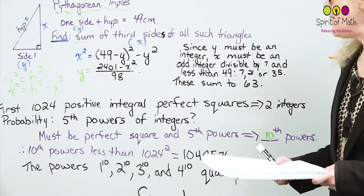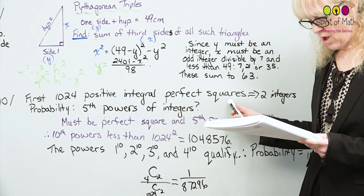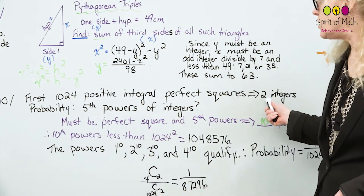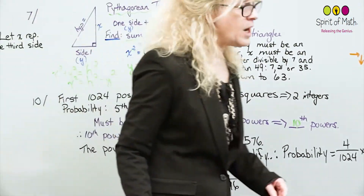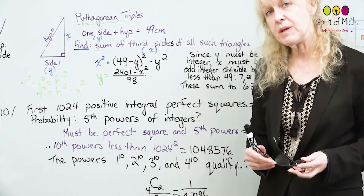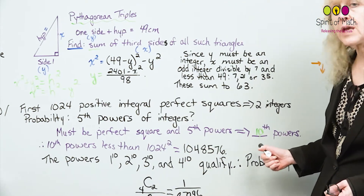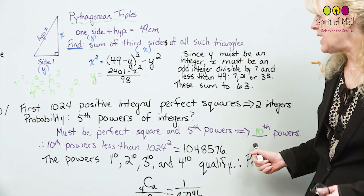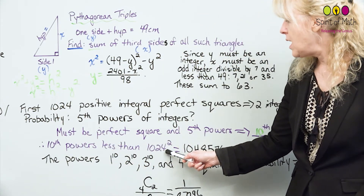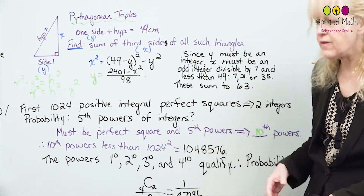Number ten: two integers are selected from the first 1024 positive perfect squares. What is the probability that both numbers are fifth powers of integers? Since we're picking from perfect squares, the numbers must be perfect squares. They also have to be fifth powers. If a number is both a perfect square and a fifth power, it must be a tenth power. So we need tenth powers less than 1024², which is 1,048,576.